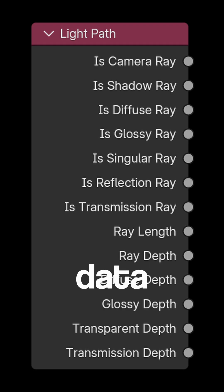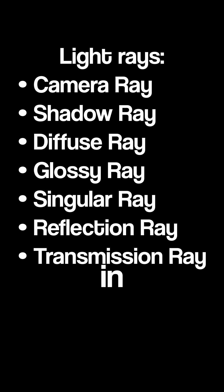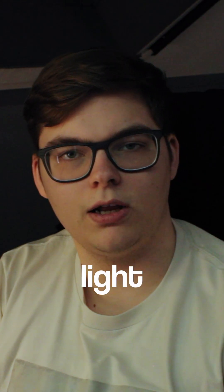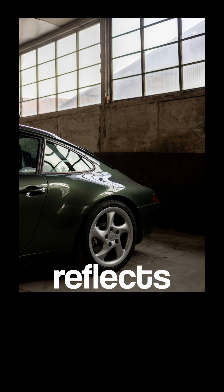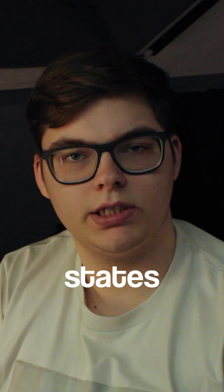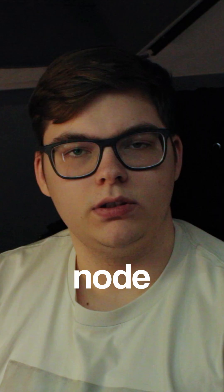The Light Path node provides data for which kind of light ray is seen in your Blender scene. Each ray just starts out as a light ray, and then when it reflects, transmits, or anything else, it will change states, and those are the states that you can get from this Light Path node.